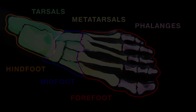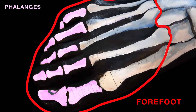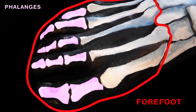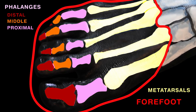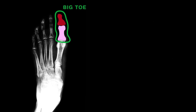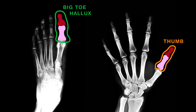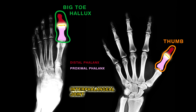The forefoot is composed of the phalanges — your five toes — and the metatarsals, which are longer bones attached to those. In two or three categories, your phalanges divide: distal, middle, and proximal, based on where they reside. Note that the big toe is also called the hallux, and just like your thumbs, it has no middle phalanx — it just has the distal and proximal phalanges with a single interphalangeal joint in between.